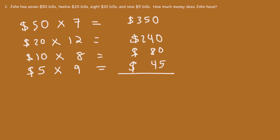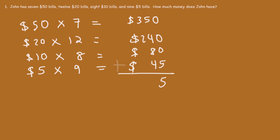So now let's perform addition. Adding the first column of numbers, we're going to get 5. Then adding the second column: 5 plus 4 is 9, 9 plus 8 is 17, 17 plus 4 is 21 — write the 1, carry the 2. Then 2 plus 3 plus 2 is 7. So he has a total of $715.